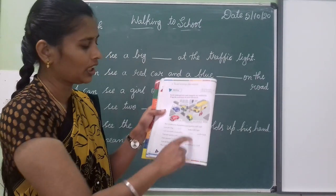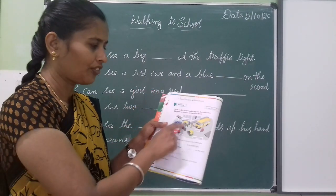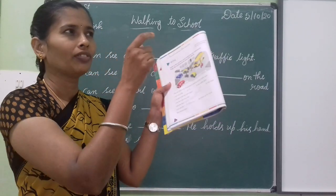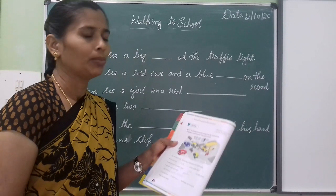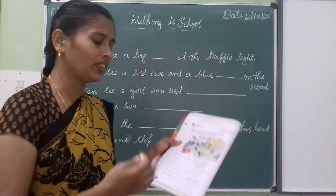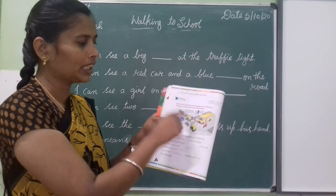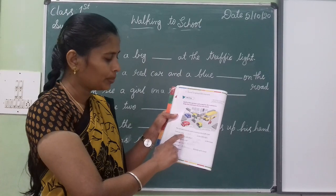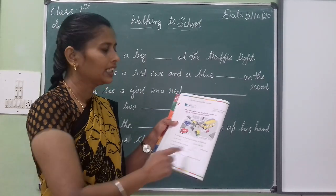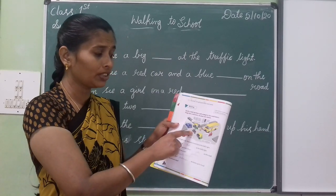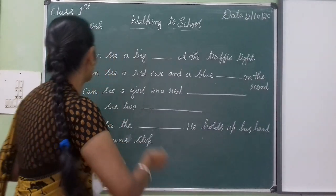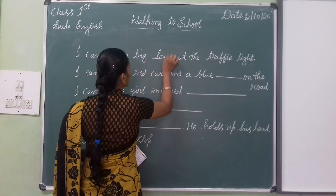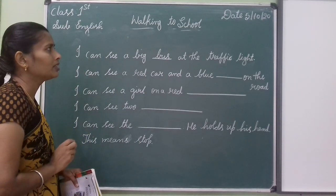See children, it is a traffic signal. When the red light is on, everyone is waiting. When the green light is on, they are going somewhere. Here some words are given — pick the correct word and write it. First one: 'I can see a big blank at the traffic light.' Which is the big vehicle? Bus. So: I can see a big bus at the traffic light.